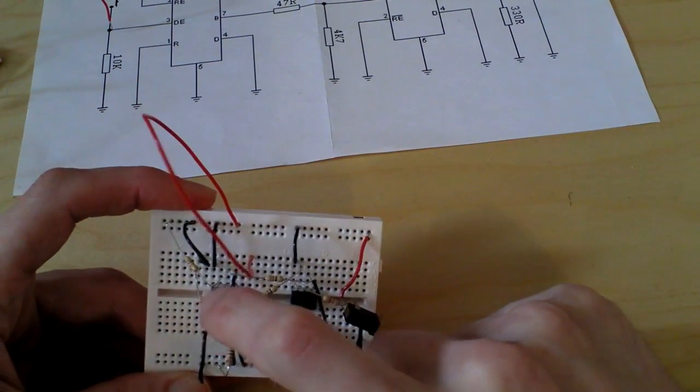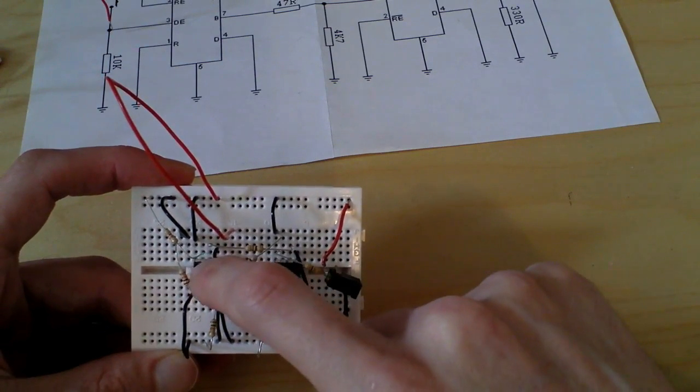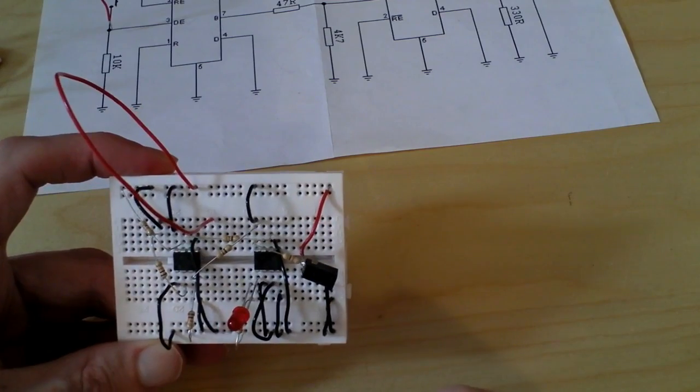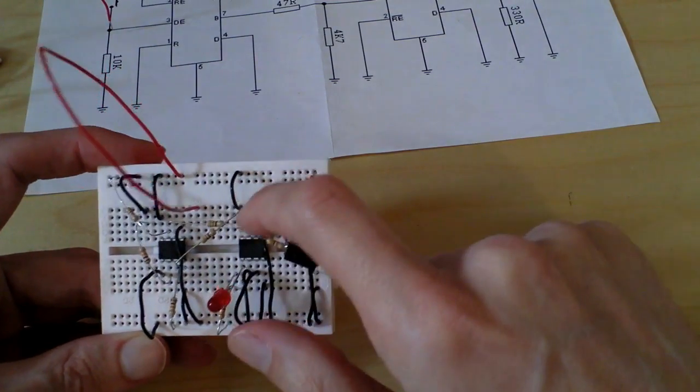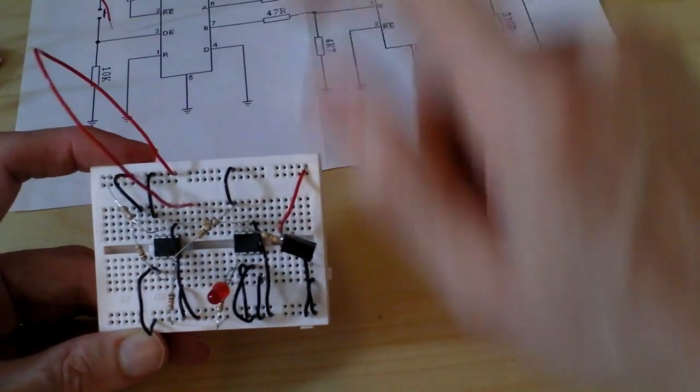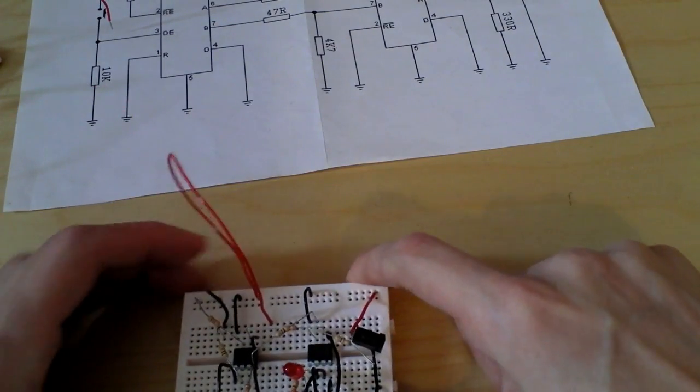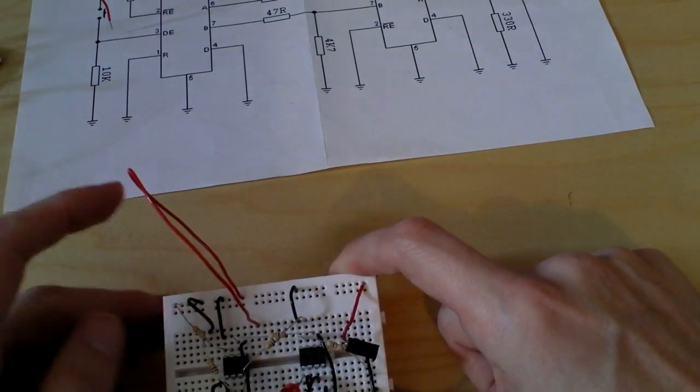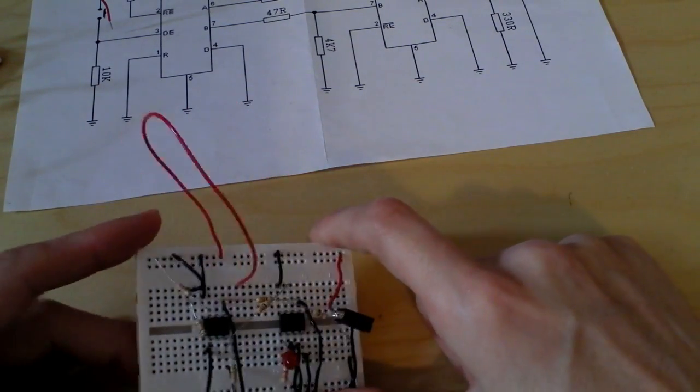That's pin 3 on, that's the driver chip, that's the receiver chip, that's the one the LED's coming off, and this is the one which is driving the line. And the line uses these two resistors here to mimic the line. The 47 ohms is purely to replicate line losses and things like that.